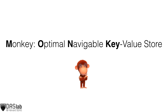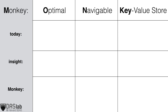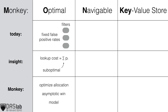To address these problems, we introduce MONKEY, which stands for Optimal Navigable Key Value Store. MONKEY addresses the above-mentioned problems using the following insights. Firstly, we observe that existing systems set the same false positive rate to all their bloom filters. Our insight is that lookup cost is proportional to the sum of false positive rates for all filters, yet setting a fixed false positive rate for all filters does not minimize the sum. To address this, we optimize the allocation of main memory among the bloom filters to minimize lookup cost. We show that this achieves an asymptotic win, and we further develop a precise closed-form expression that enables trading off main memory against lookup cost.